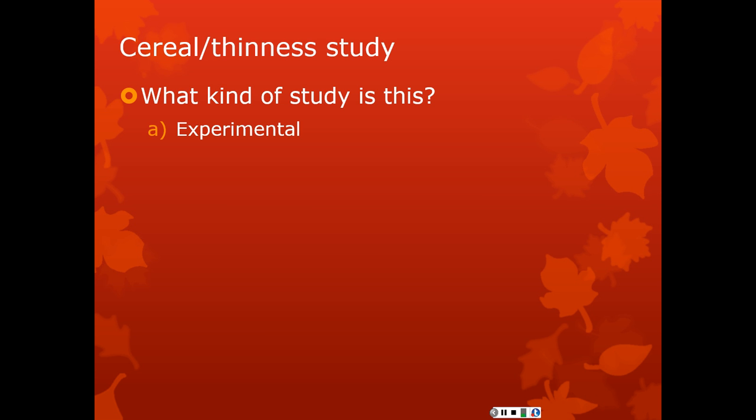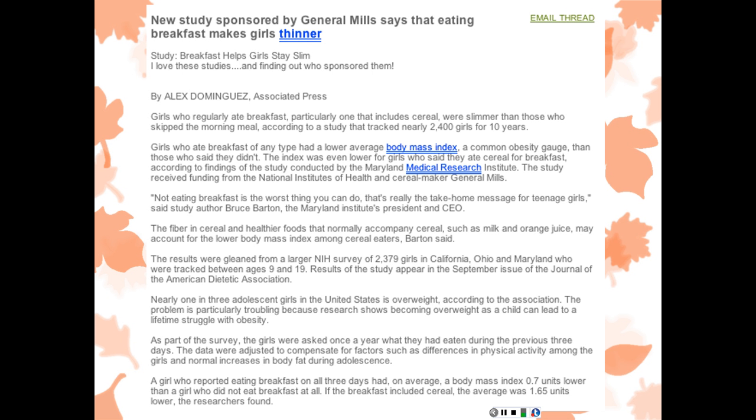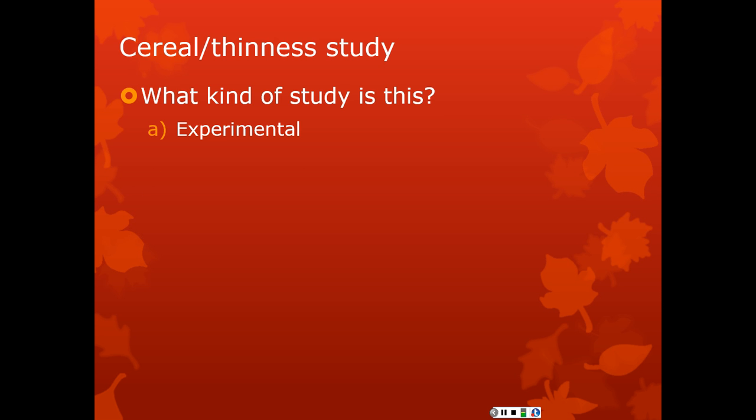Here's the answer. It's observational. Let's go back and look. Did somebody make some girls eat breakfast and make others not? Or did some girls say, or did some people, did somebody go in and randomly assign some people to eat cereal and other people not to eat cereal? No. The girls got to choose themselves. This is a classic example of an observational study.